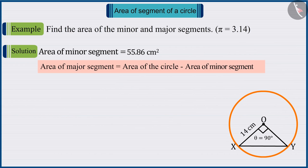Absolutely correct. For this, from the area of the circle, the area of the minor segment is subtracted.